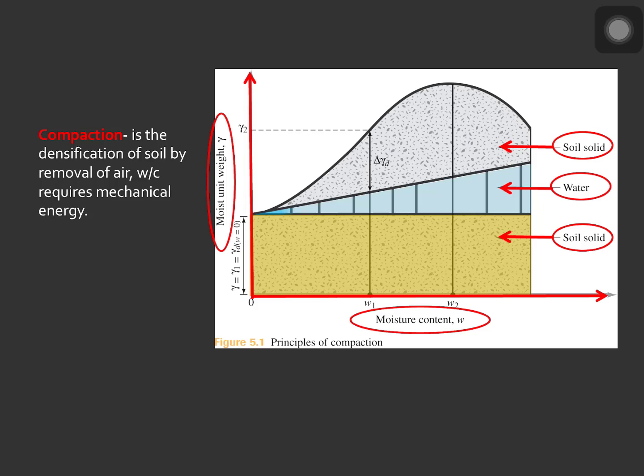When the moisture content is gradually increased and the same compactive effort is used for compaction, the weight of the soil solids in a unit volume gradually increases.